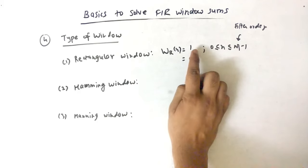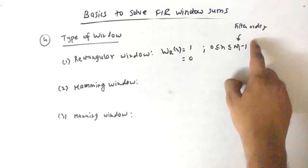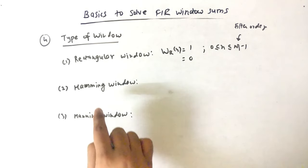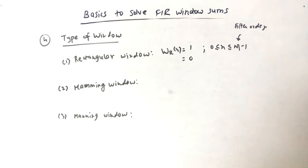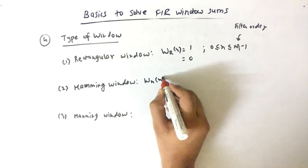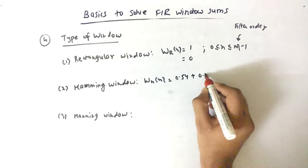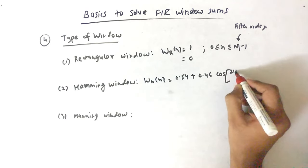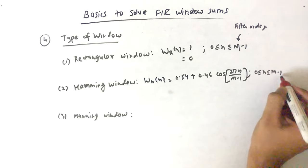Rectangular window says W of N equal to 1 when my range is from 0 to M-1 and M-1 is the filter order. Now Hamming window and Hanning window, the difference is M and N. Don't get confused when you see Hamming and when you see Hanning, because both the formulas are different. Hamming says W of N equal to 0.54 plus 0.46 cosine of 2 pi N upon M-1, and the range is also from 0 to M-1.